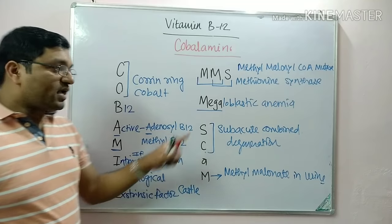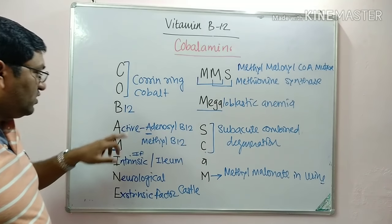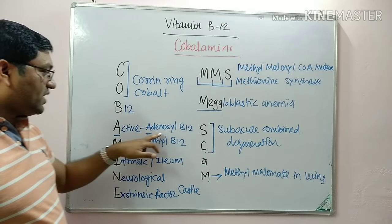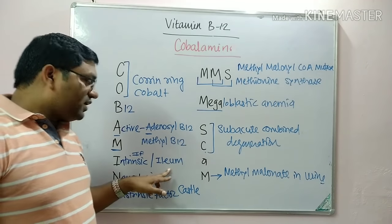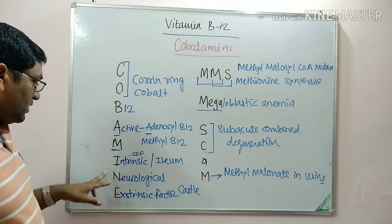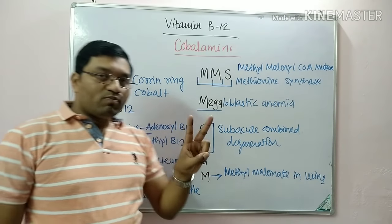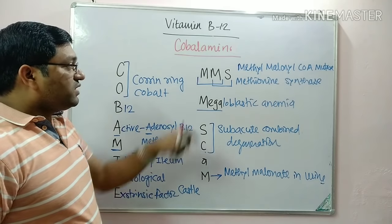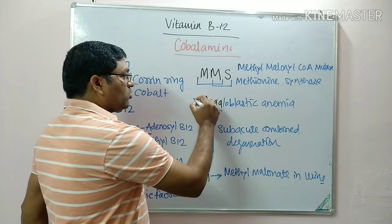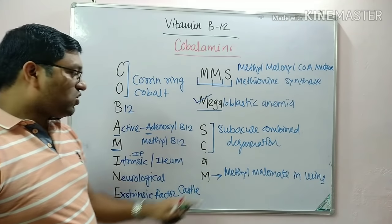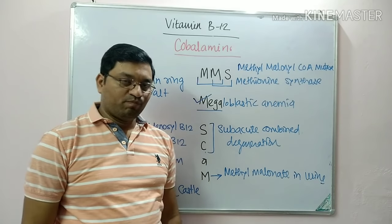To summarize the key aspects: Vitamin B12 contains a corrin ring with a central cobalt atom; it has two active coenzyme forms — adenosyl cobalamin and methyl cobalamin; it requires intrinsic factor for absorption in the ileum; deficiency causes neurological manifestations; it is the extrinsic factor of Castle; it catalyzes methylmalonyl-CoA mutase and methionine synthase reactions; deficiency leads to megaloblastic anemia, subacute combined degeneration of the spinal cord, and methylmalonic aciduria.